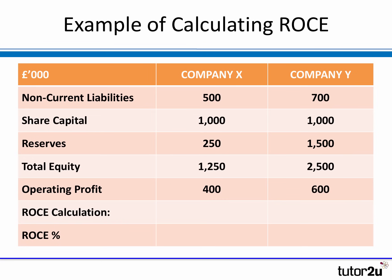Let's look at an example. On screen I've listed summary information needed to calculate ROCE for two imaginary businesses — Company X and Company Y. Company X has non-current liabilities of £500,000, share capital of £1 million, and reserves of £250,000, giving total equity of £1.25 million, with an operating profit of £400,000. Company Y has higher reserves of £1.5 million and share capital of £1 million, giving total equity of £2.5 million, and higher non-current liabilities of £700,000.